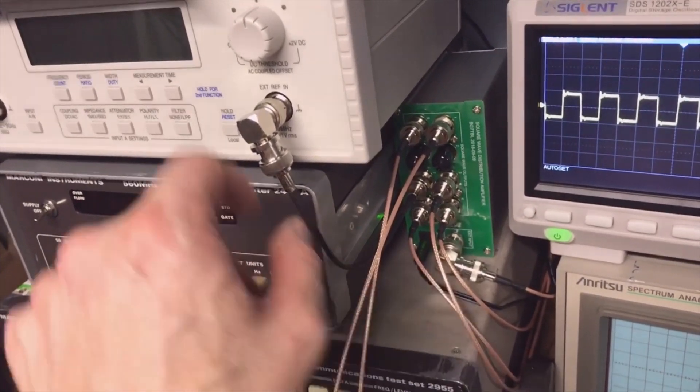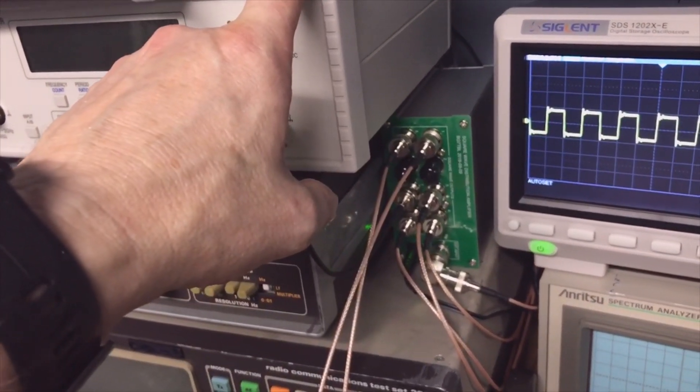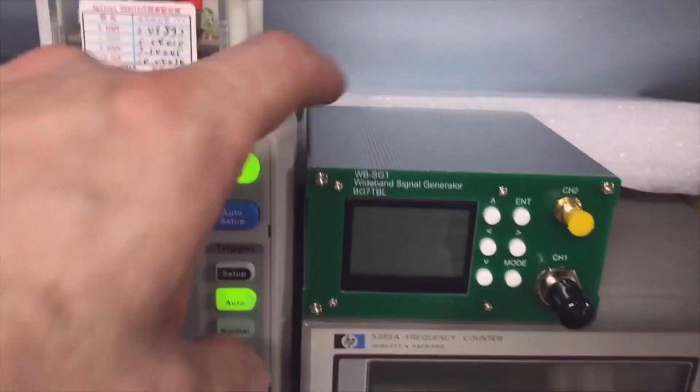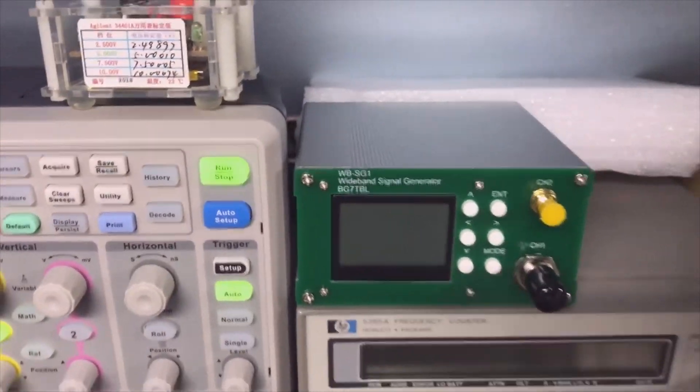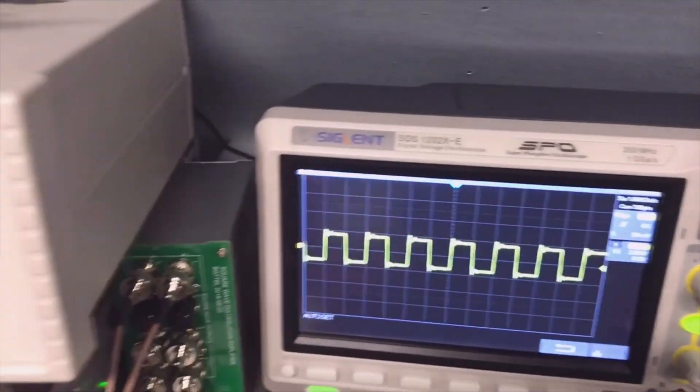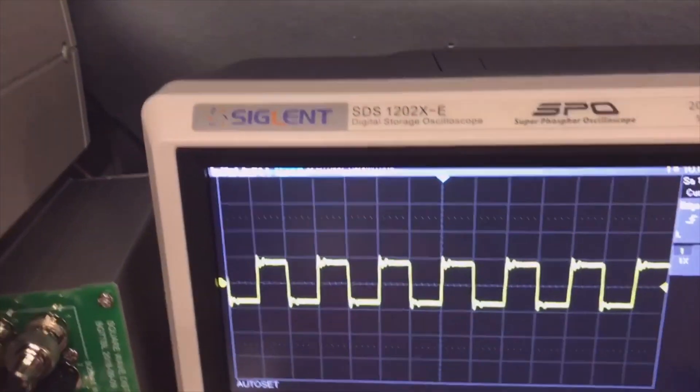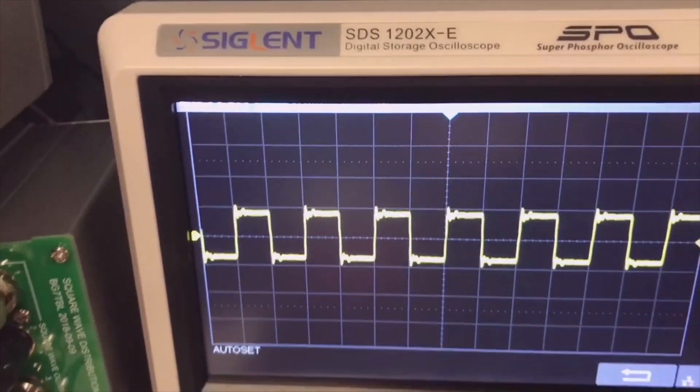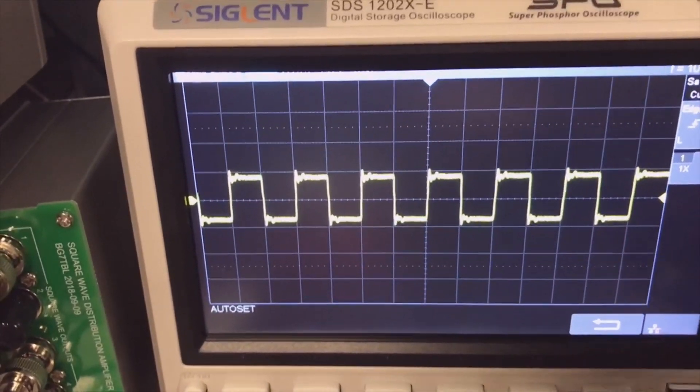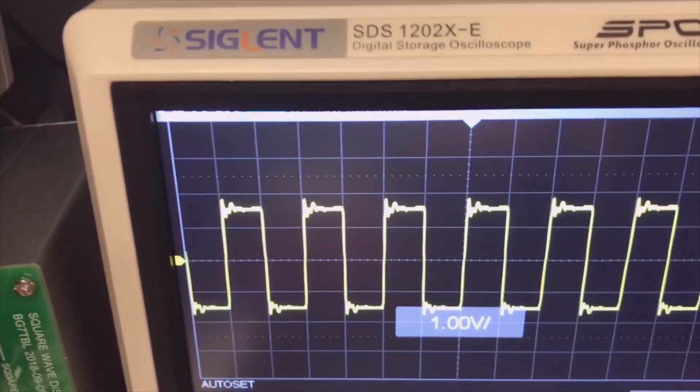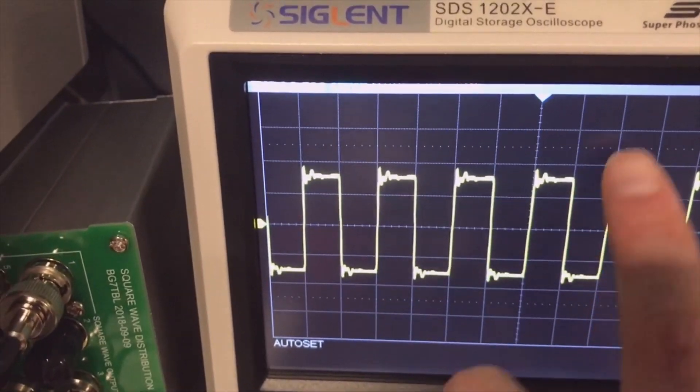And the other 10 goes here to the distribution amplifier - one to the HP, to the Rohde & Schwarz, to the TTI, and to my signal generator. And one in the top I put here - the oscilloscope.